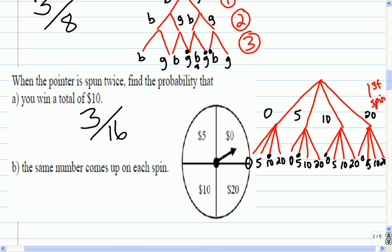What if I wanted to get the same number on each spin? Four to 16. Yeah, so this time, it would be 0 and 0. It would be 5 and 5, 10 and 10, 20 and 20. So there are four out of 16, or one quarter.